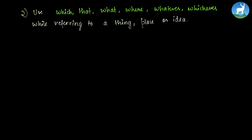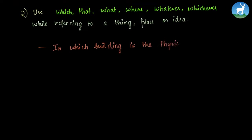We use which, that, what, where, whatever or whichever while referring to a thing, a place or an idea. For example: 'In which building is the physics lab?' — we're talking about the building, a place where the physics lab is situated.